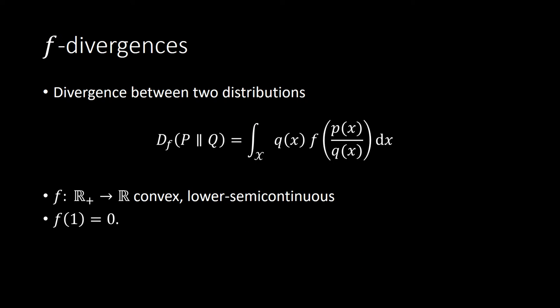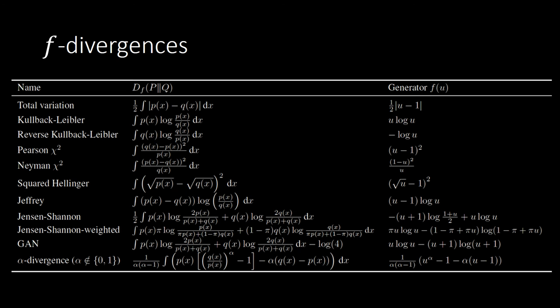We generalize generative adversarial networks to the class of f-divergences. f-divergences are divergence measures between distributions characterized by a convex function f. Here is a list of f-divergences. f-divergences include the Kullback-Leibler divergence, the reverse Kullback-Leibler divergence, and other divergences.